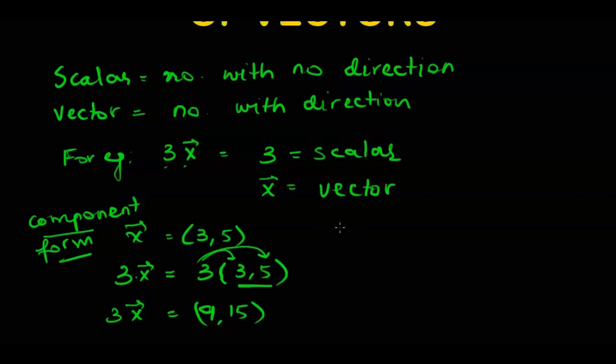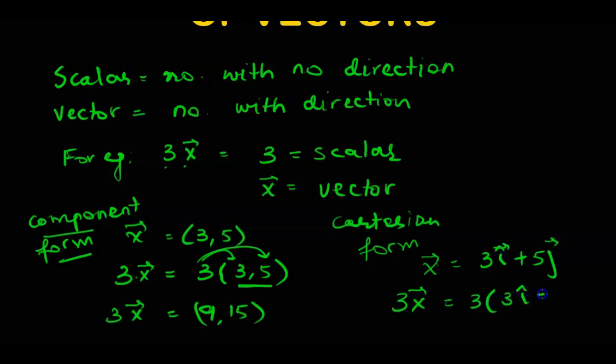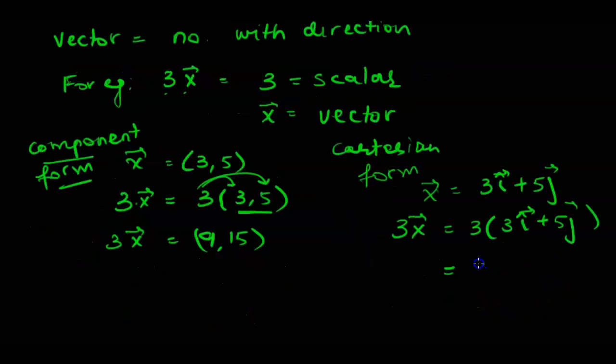If we are asked to write it down in Cartesian form, we can write x vector as 3i plus 5j. You can write it with a vector sign or a cap sign. So 3x would be 3 multiplied by 3i plus 5j and from here we would get 9i plus 15j. And that's our 3x vector.